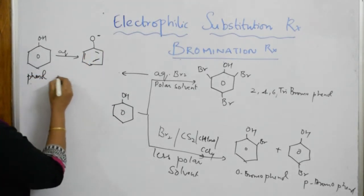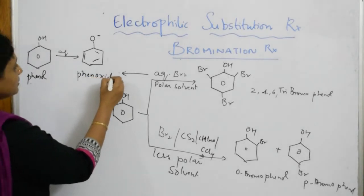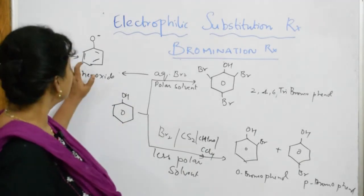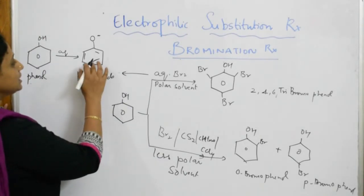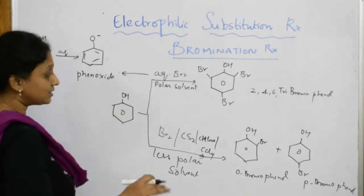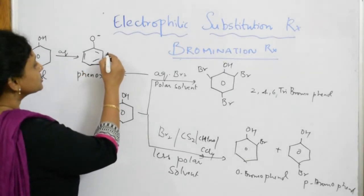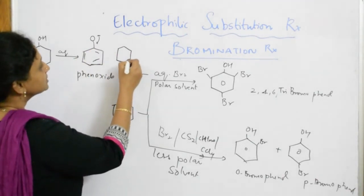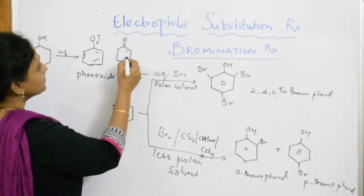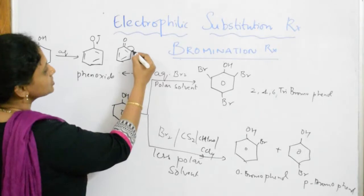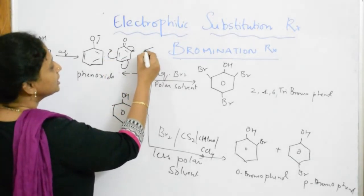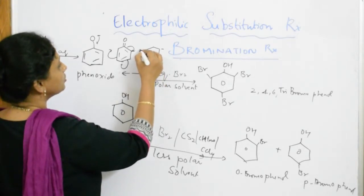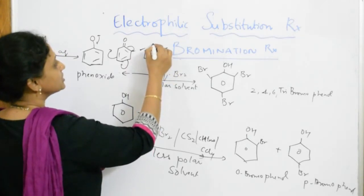This phenoxide ion is highly and strongly electron-donating compared to phenol itself. Phenoxide is a strongly electron-donating group. Because it is in a polar solvent, it completely dissociates and forms a strongly electron-donating species. Because of this strongly electron-donating group, it will donate its electrons into the ring — this becomes a partial double bond character due to resonance.